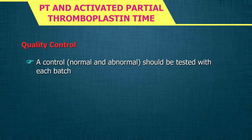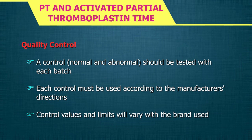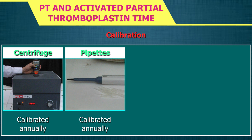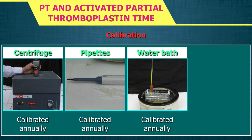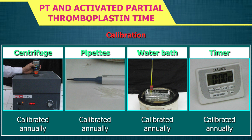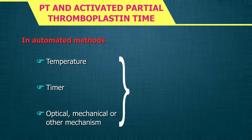For quality control, a normal and abnormal control should be tested with each batch, according to the manufacturer's directions. Control values and limits will vary with the brand used. For calibration: the centrifuge used for PPP, the pipettes, the water bath for manual methods, and the timer should all be calibrated annually. Multiple areas of the water bath should be calibrated for operating temperature. In automated methods, temperature, timer, and optical or mechanical mechanisms of testing should also be calibrated.